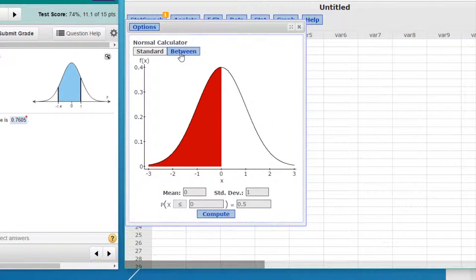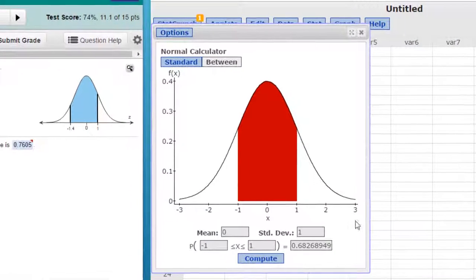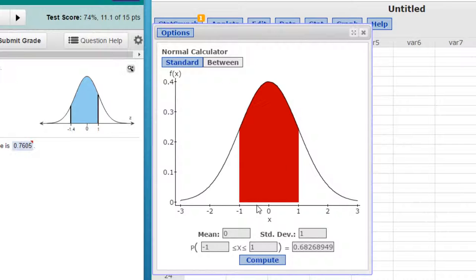We want to click on the Between tab, and we get our standard normal curve, and we can see the area now is between minus 1 and plus 1.